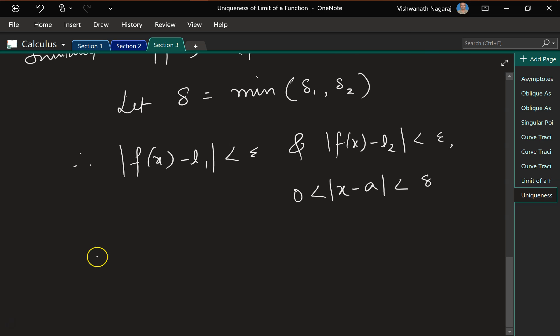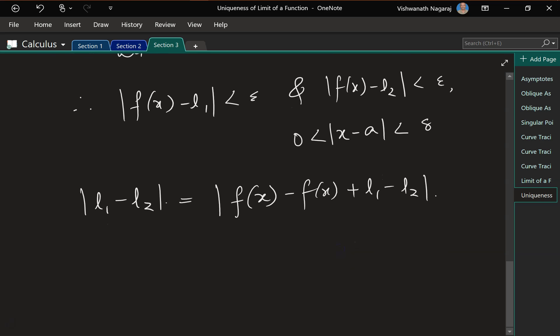Now, let's go back to this l1 minus l2. Now let's manipulate. Let's introduce f of x. So let's introduce f of x minus f of x. We can do that because these two cancel out. It is as good as 0. So as such, the value doesn't change.